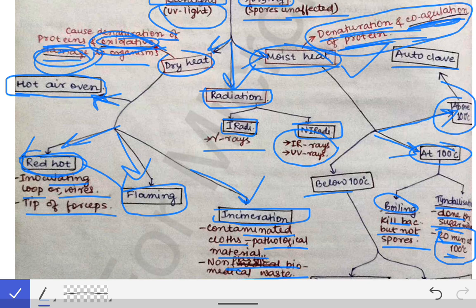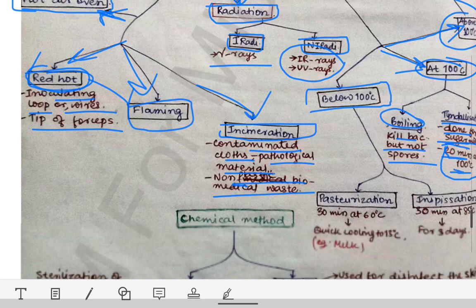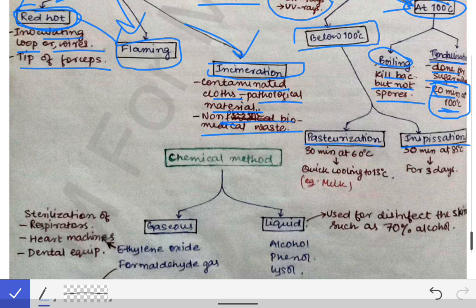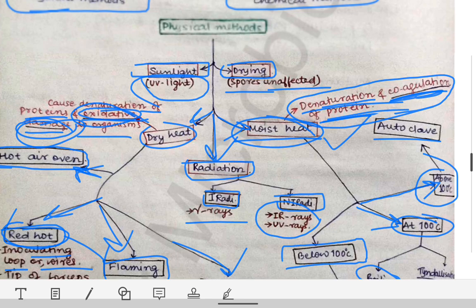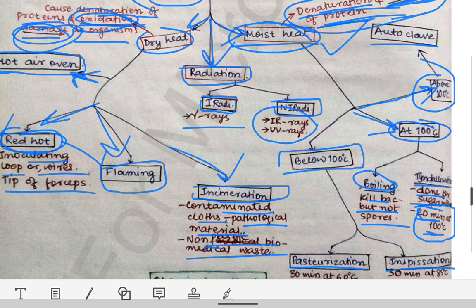Methods operated below 100°C are pasteurization and inspissation. In pasteurization, the substance is kept at 60°C for 30 minutes, then quickly cooled to 30°C, and it is done for milk. In inspissation, the object is kept at 85°C for 30 minutes, and this is done for three consecutive days to achieve sterilization.